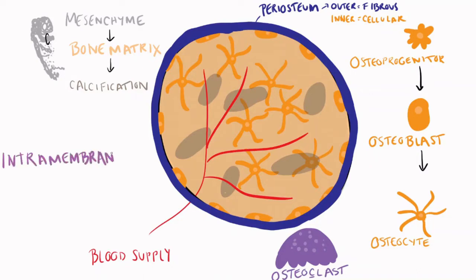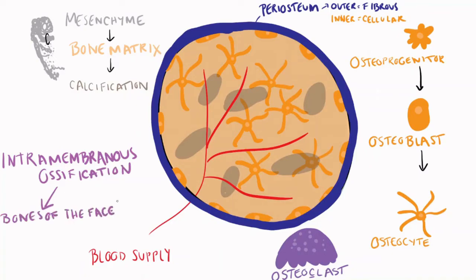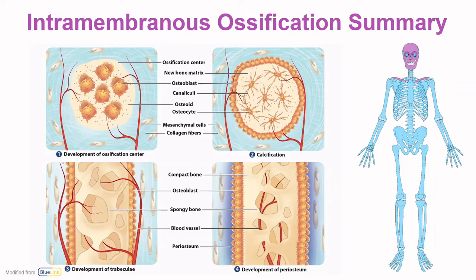This has been a short visual representation of intramembranous ossification, which forms the bones of the face, the flat bones of the skull, and the majority — or the lateral portion — of the clavicle. This figure here shows a nice summary of the process of intramembranous ossification.